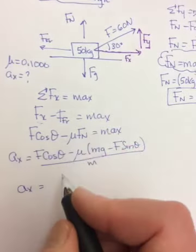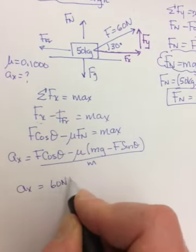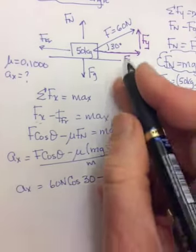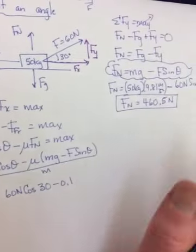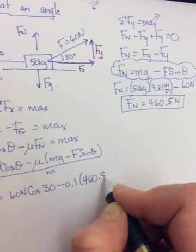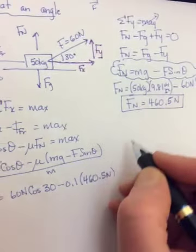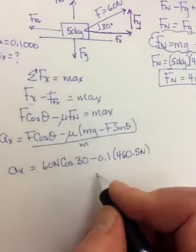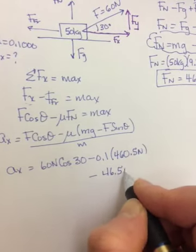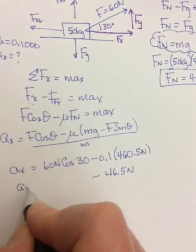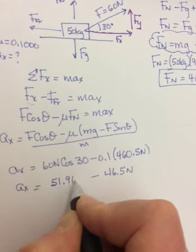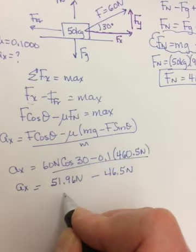So ax equals, f is 60 newtons, cos of 30, minus mu is 0.1. And just to save time, since I already found the number, and we are on a 10 minute time limit here. It's 460.5 newtons. So you would fill in all these numbers up here. So this will end up being 46.5 newtons. And this ends up being 51.96 newtons. Whoops, don't forget to divide by m.